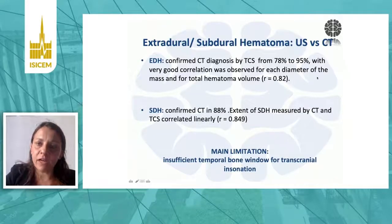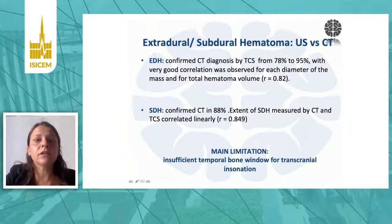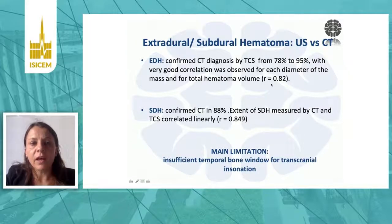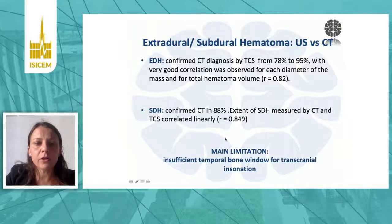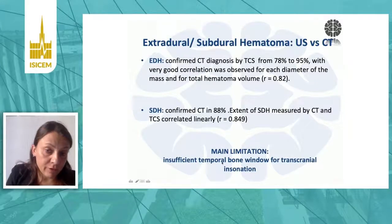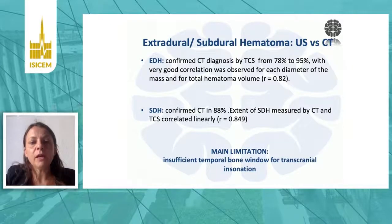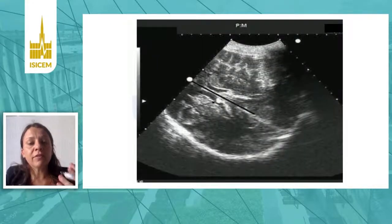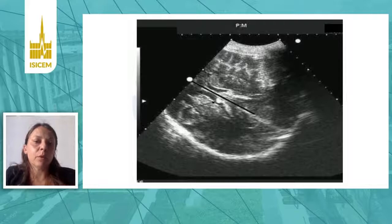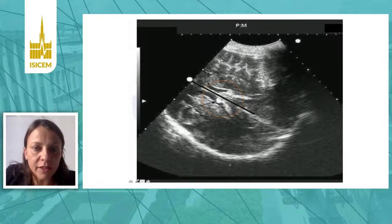The literature clearly shows a very good correlation between ultrasound and CT findings in terms of the diameter of the mass and hematoma volume, both for extradural and subdural hemorrhage. An important limitation of this technique is that we are not always able to assess the presence of extradural or subdural hematoma in specific parts of the brain due to the temporal bone. But in a case where a patient has undergone decompressive craniectomy, this becomes much easier.